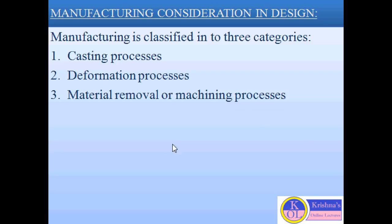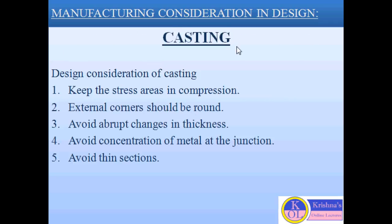These manufacturing processes are generally classified into three categories. First is casting processes. Second is deformation processes. And third is machining processes or material removal processes. Taking the first process, that is casting process — parts which are complex in design and difficult to machine are generally made by casting processes using sand molds. And mostly these sand cast parts are made by cast iron, aluminum alloy, and brass.